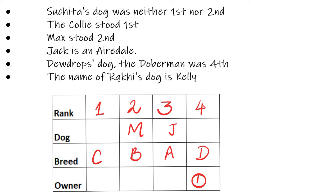Then it says Rakhi's dog's name is Kelly. Kelly cannot go in the fourth position as that is Dewdrop's dog, so Kelly goes in the first position — that is Rakhi's dog. So the names are Kelly, Max, Jack, making the last one Lad. The first statement we had left: Suchita's dog was neither first nor second, so Suchita's dog is third. That means the remaining dog belongs to Anubhuti.